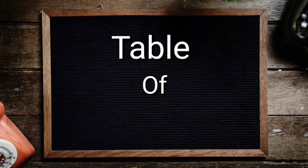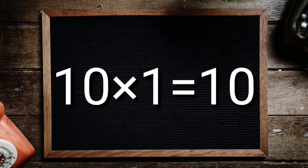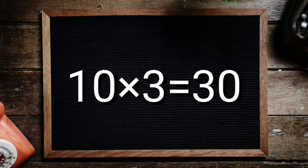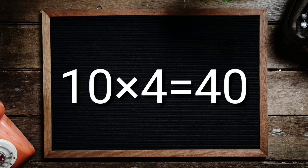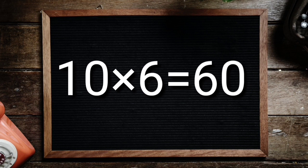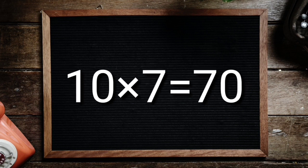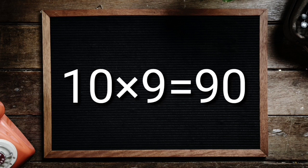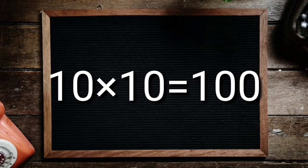Table of 10. 10 1's are 10, 10 2's are 20, 10 3's are 30, 10 4's are 40, 10 5's are 50, 10 6's are 60, 10 7's are 70, 10 8's are 80, 10 9's are 90, 10 10's are 100.